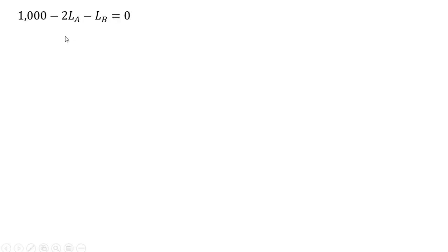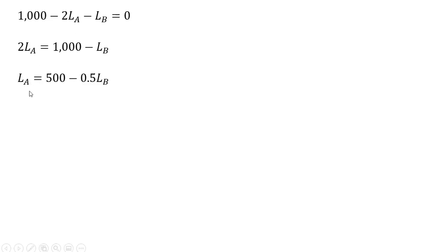Rewriting that last result and solving for L subscript A, dividing through by 2, this can be considered firm A's reaction function. It shows the profit-maximizing number of workers that firm A should hire given the number of workers firm B hires.